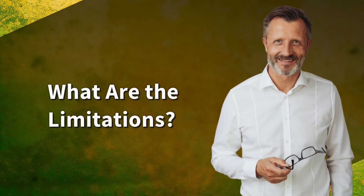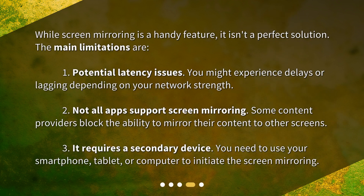What are the limitations? While screen mirroring is a handy feature, it isn't a perfect solution. The main limitations are: 1. Potential latency issues — you might experience delays or lagging depending on your network strength. 2. Not all apps support screen mirroring — some content providers block the ability to mirror their content to other screens. 3. It requires a secondary device — you need to use your smartphone, tablet, or computer to initiate the screen mirroring.